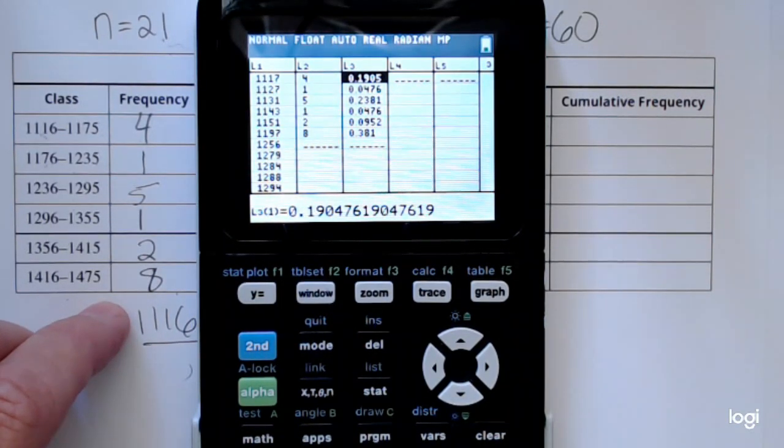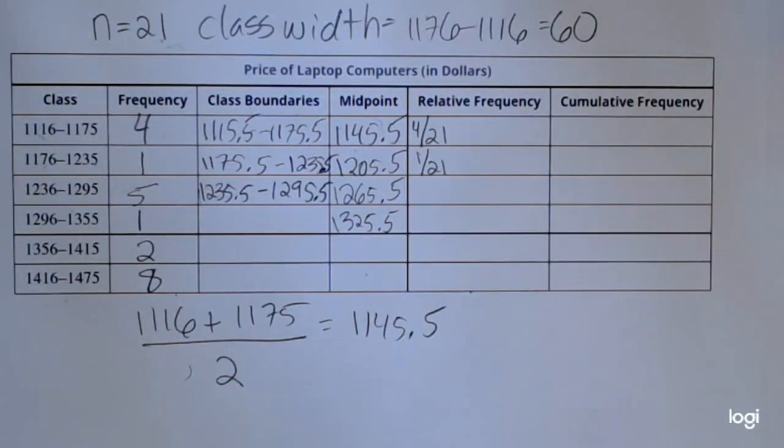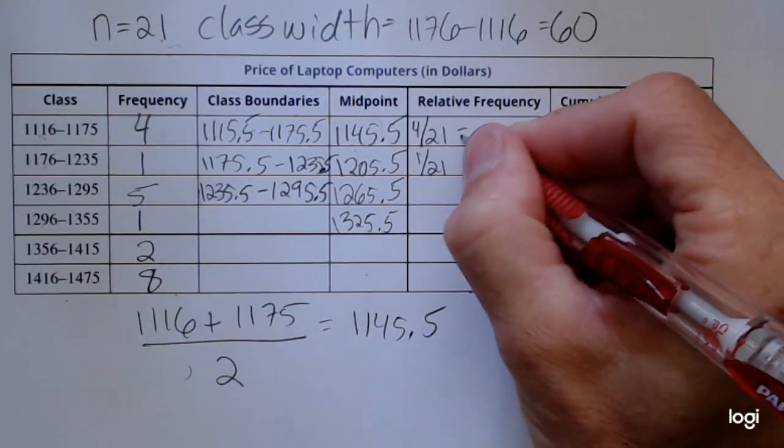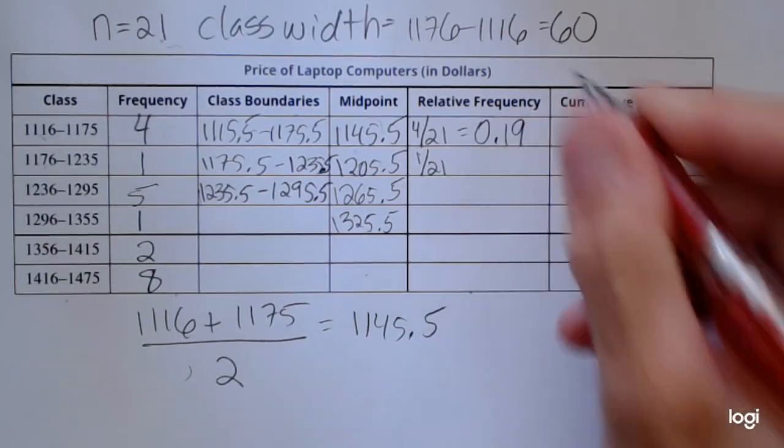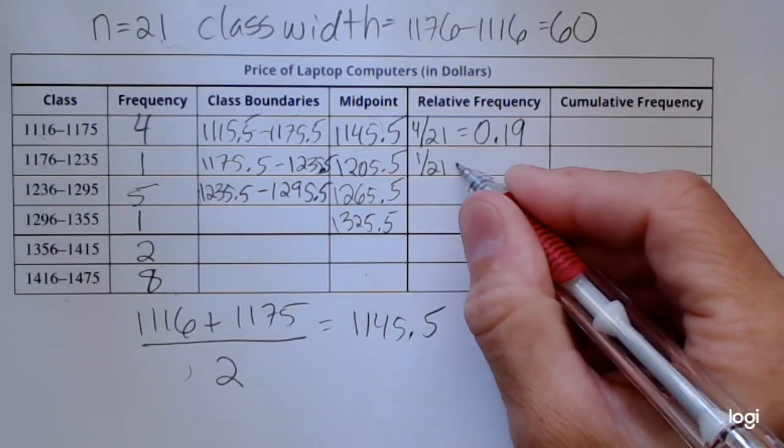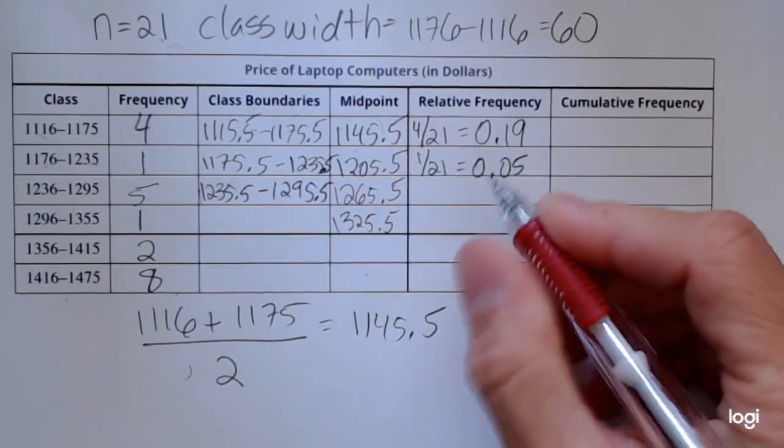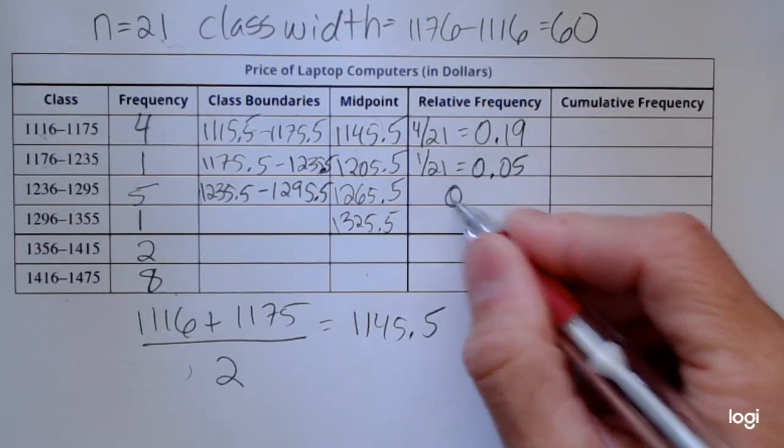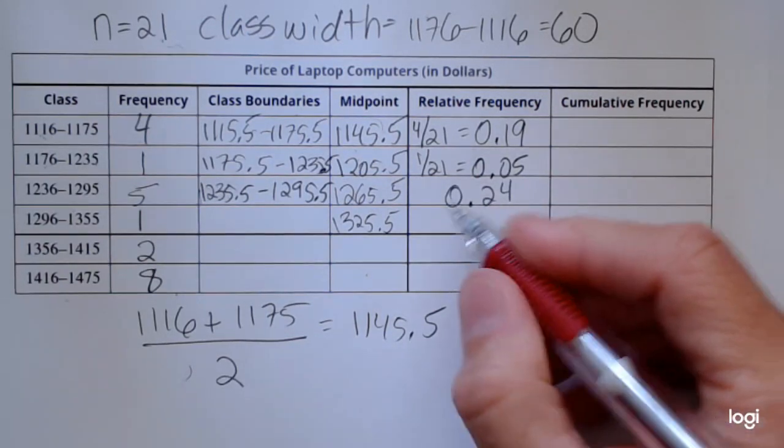So it does the calculation for me, and then you can round to however many decimal places you want to round. I'm just going to go ahead and round to two decimal places, filling that out, just copying right from my calculator.